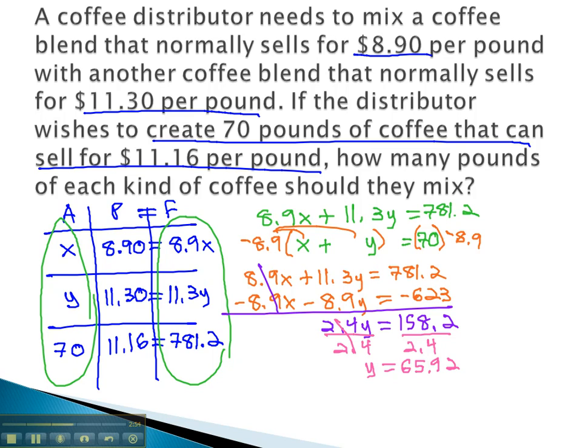We still need to find x, which we can quickly solve by plugging in to that second equation. x plus y, or x plus 65.92 equals 70. To get the x alone, we'll subtract 65.92 from both sides. And we find out x is equal to 4.08.